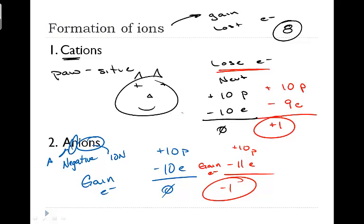What type of atoms form cations? Remember, these are metals. Anions are formed by nonmetals.